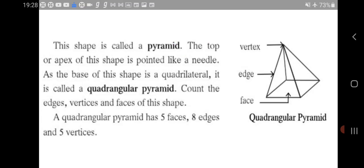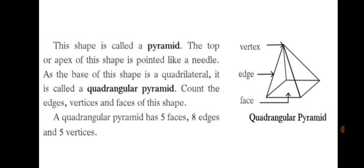Next, we shall learn about pyramids. This shape you see here is a pyramid. The top or apex of this shape is pointed like a needle. As the base of this shape is a quadrilateral, it is called a quadrangular pyramid. You can see the base is quadrilateral in shape.